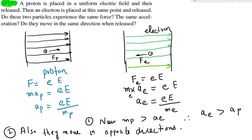If you see the two expressions of acceleration of proton and acceleration of electron, you can see in the denominator different masses are there. The mass of electron is much less than the mass of proton, therefore acceleration of the proton will be much smaller.